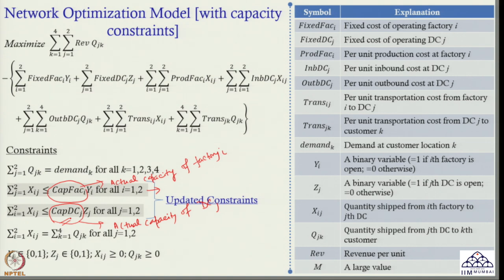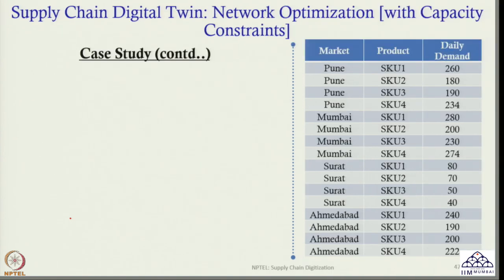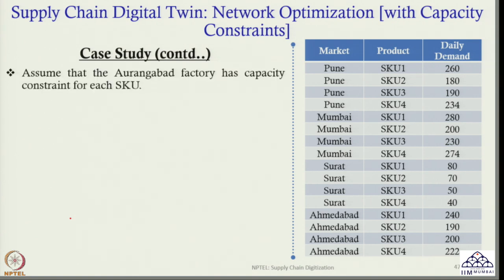With this small modification we can solve the network optimization model and get the result. Now let us do the hands-on and see one case study. We will continue the previous case study — the only thing we will do is some modification in terms of capacity constraints. Assume that the Orangabad Factory has capacity constraints for each SKU. We have four SKUs: SKU 1, 2, 3, 4, and these are my markets: Pune, Mumbai, Surat and Ahmedabad. Each market has four SKUs and demand for these SKUs is given in the last column — same as the previous case discussed in the last lecture.